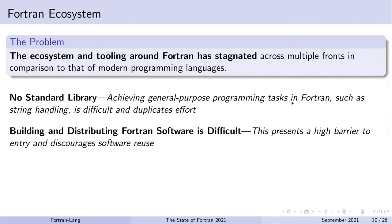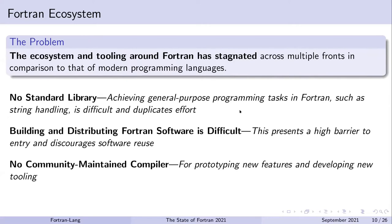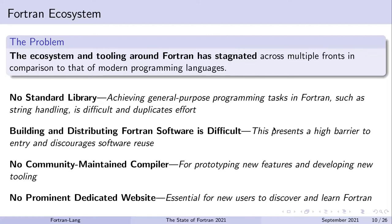Building and distributing Fortran software is difficult. This provides quite a high barrier for new users and discourages the reuse of software, since it takes that little bit more extra effort to incorporate third-party libraries into your own project. Fortran also has no community-maintained compiler, which makes it easy to prototype new features and develop new tooling — and indeed, this is one of the motivating points for the LFortran compiler. Finally, Fortran has not really had a prominent dedicated website for drawing in new users to learn about Fortran, or for existing users to learn about the ongoing development of the language.